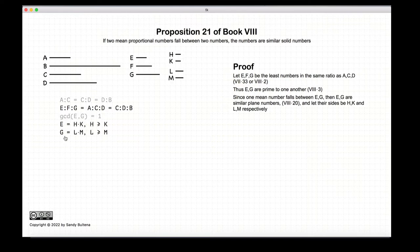e and g, since we know they are planar numbers from the previous proposition, let them be equal to h times k, and let g be equal to l times m. And just to keep things consistent, we are going to specify that h and l are the larger of the two sides.